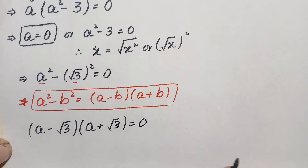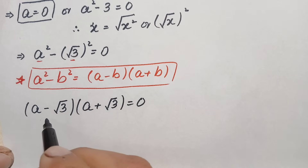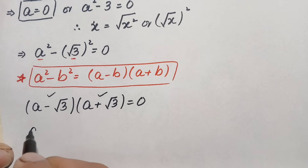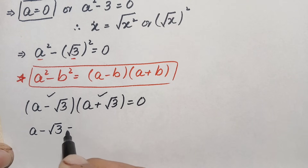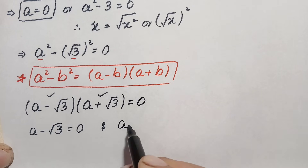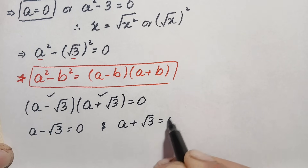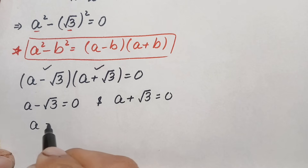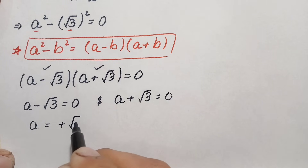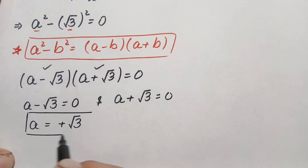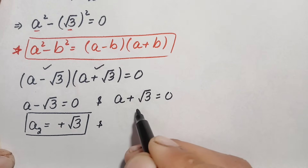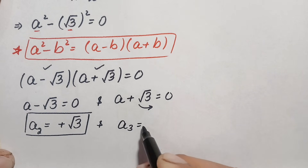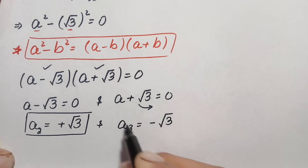Since the product of these two linear expressions is zero, either expression equals zero. The first equation gives a minus √3 equals zero, and the second equation gives a plus √3 equals zero. Moving the terms to the right-hand side: the second value is a₂ equals positive √3, and the third value is a₃ equals negative √3.